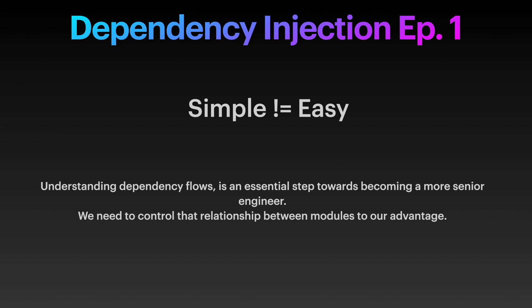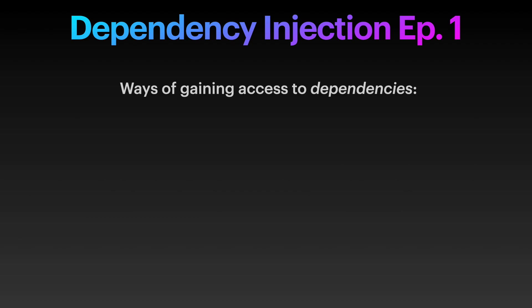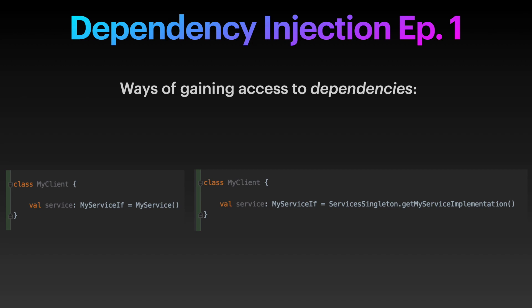So, let's see how we can gain access to other dependencies. We can create them on the spot, like that. Or we can use some sort of static method or singleton to gain access to a dependency, like that. Those are valid ways of obtaining dependencies — one class creates and references another. This is called an implicit dependency, as we cannot know the dependency just by looking at the class's public API. It's locked inside. When we create this class, there is no way of knowing what it depends on just by looking at it from the outside, since its dependencies are created from within.